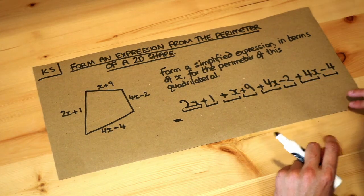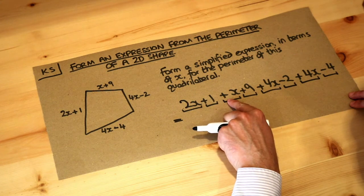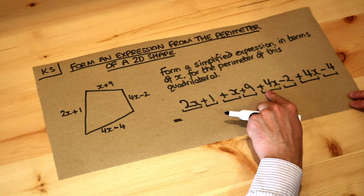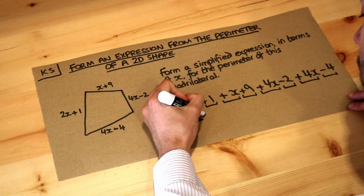Let's collect the x terms together. We've got 2 lots of x plus x, that's 3x. Plus another 4 lots of x, that's 7x. Plus another 4 lots of x, that's 11x.